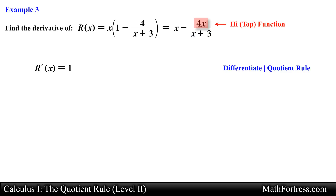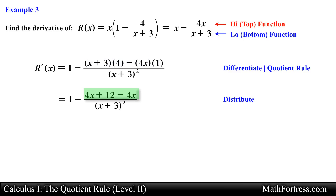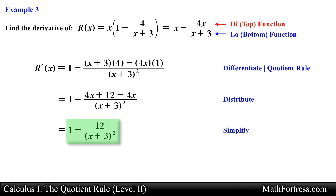We will let 4x be our high function and the quantity x plus 3 be our low function. Applying the quotient rule we obtain the following expression. Then we go ahead and distribute each of the terms in the numerator and simplify by collecting like terms. In the end, the derivative of r is equal to 1 minus 12 over the quantity x plus 3, squared. Always try to write functions into a derivative-friendly form before applying specific differentiation rules.